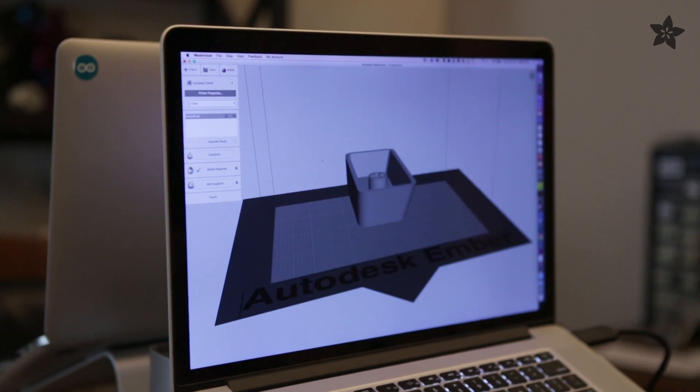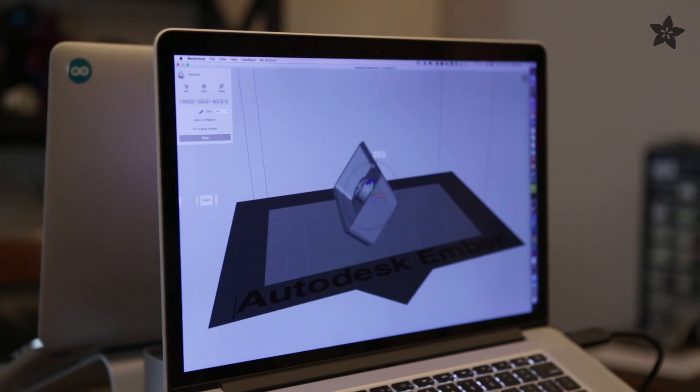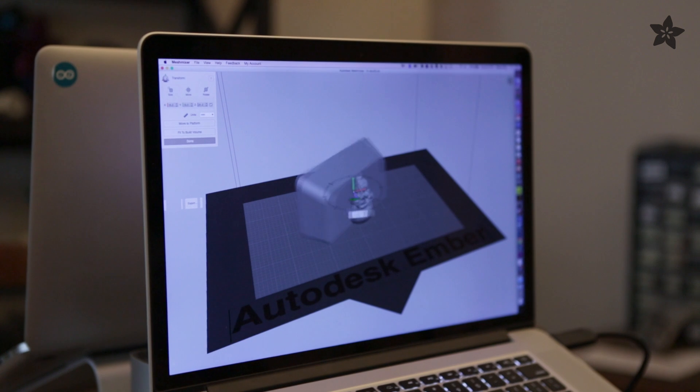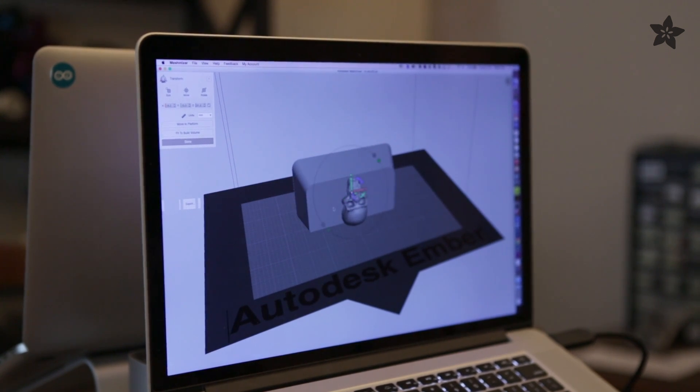To orient the part and add support structures, we're using Mesh Mixer. We'll lay it flat on the front side, which has a decent amount of surface area, and this will make the layers stick to the bed.